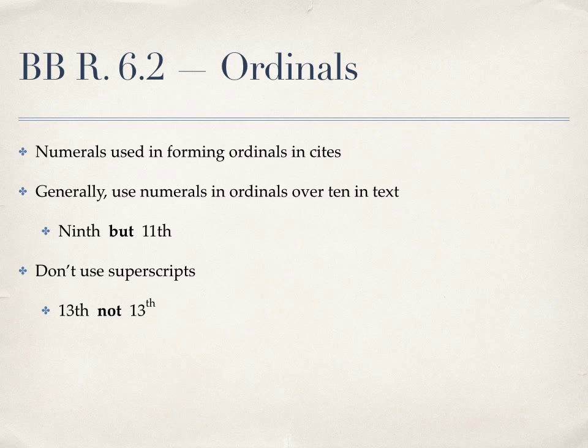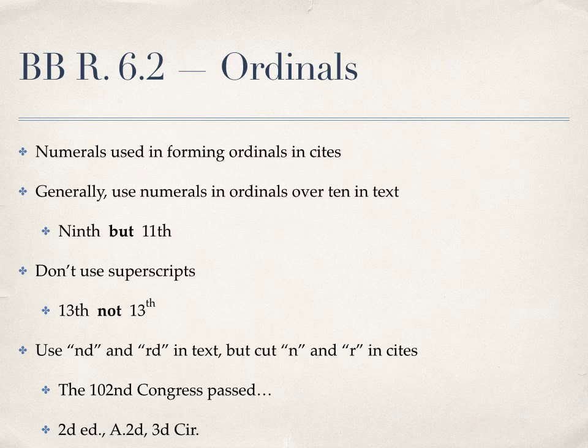When you do use numerals in your ordinals, don't use superscripts. Many word processors will autocorrect and place your ordinal designation in small print above the line — that's called a superscript. You'll want to disable that autocorrect feature when working on your bluebooking, or you'll have your bluebooking marked wrong. Next, when using an ordinal that has an RD or ND ordinal designation, such as third or second, you will include the N or R in a textual sentence. But when that third or second is in a citation, we cut the N or R — for example, for a second edition, second series, or third circuit, you eliminate the N or R and retain the D alone.